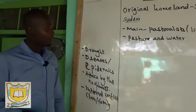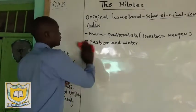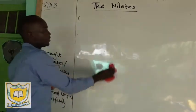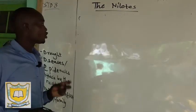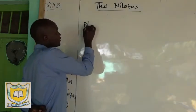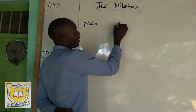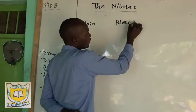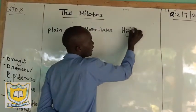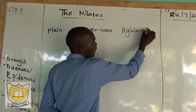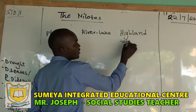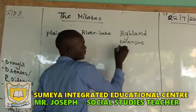Now let us look at examples of the Nilots in Kenya. The Nilots in Kenya are divided into three groups: Plain Nilots, River Lake Nilots, and Highland Nilots. The Highland Nilots of Kenya are collectively called the Kalenjin.